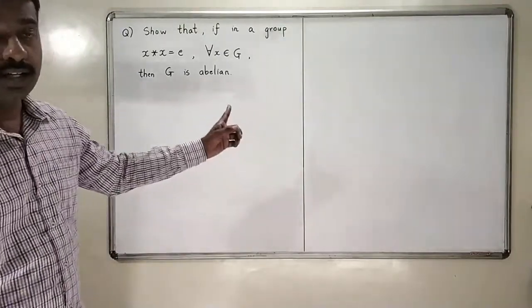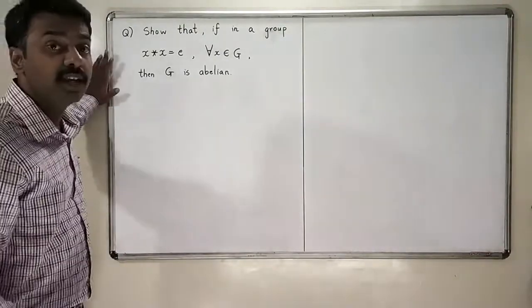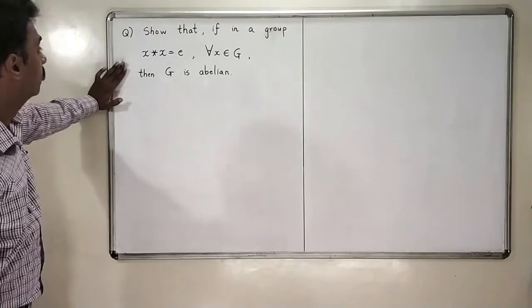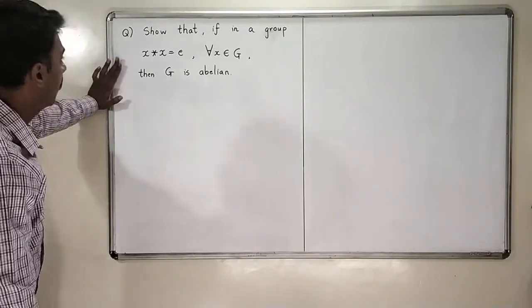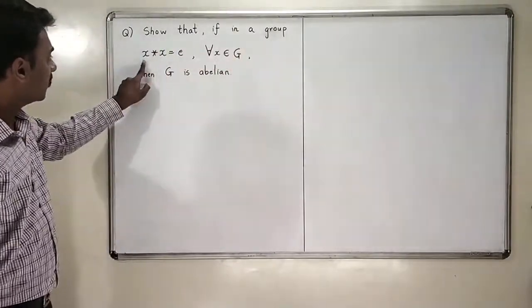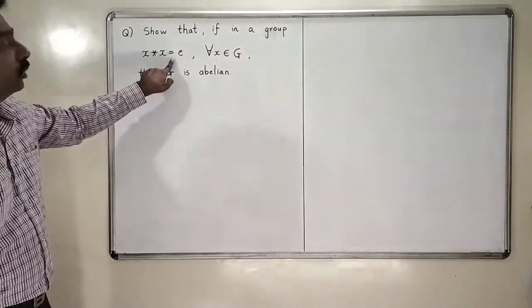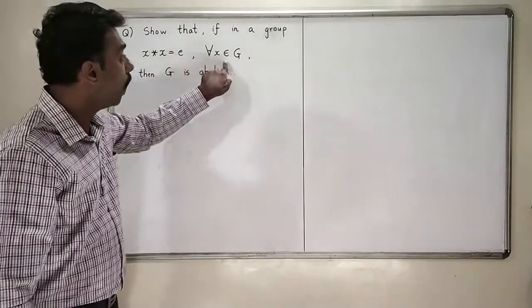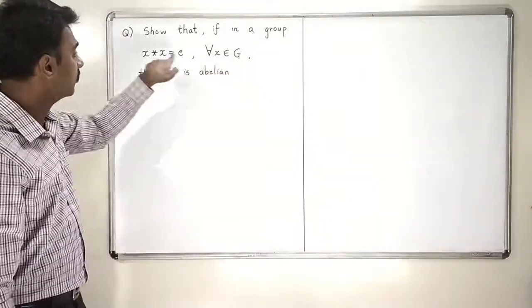Okay, so let us go to the next problem now. This is a very important problem of this section. This problem says that I have a group in which x star x is equal to identity for all x. What is the meaning of this?